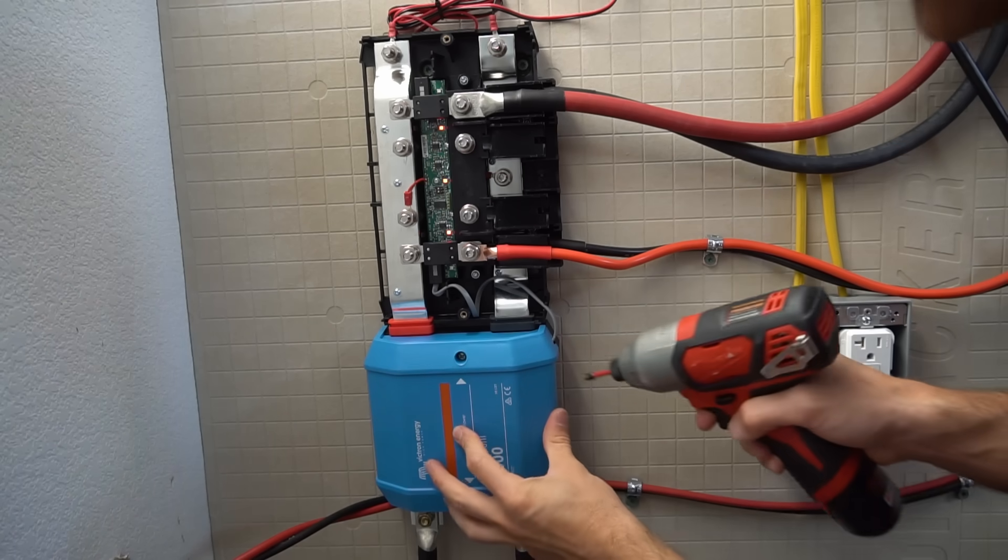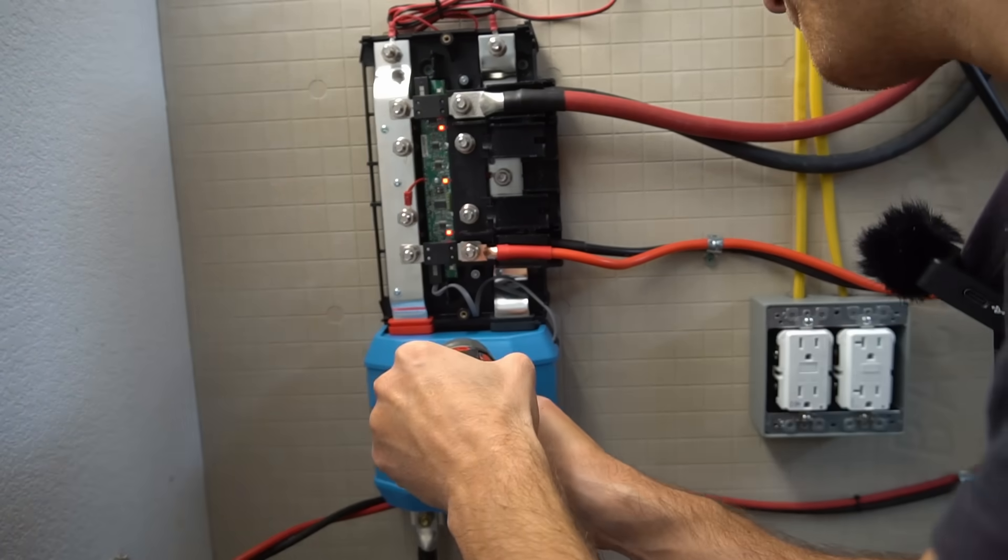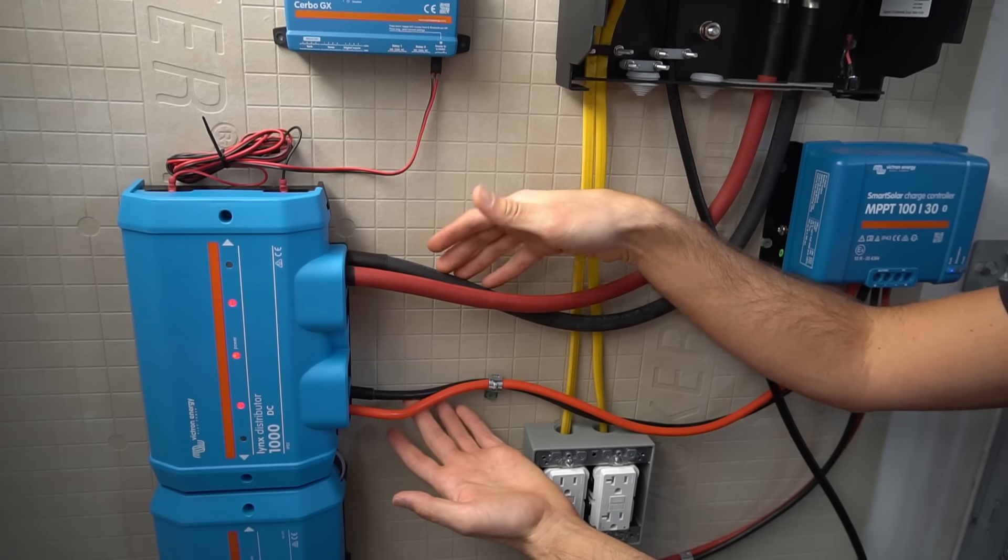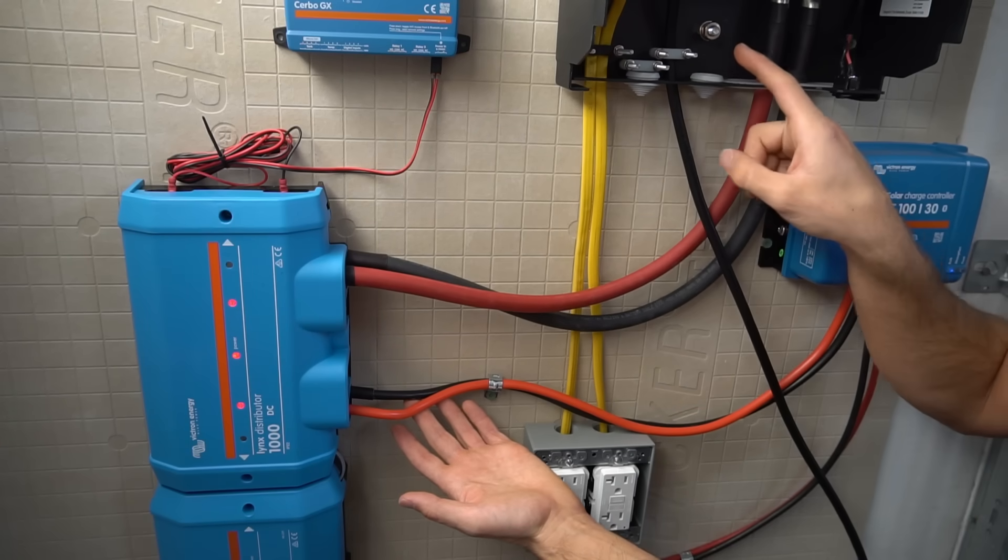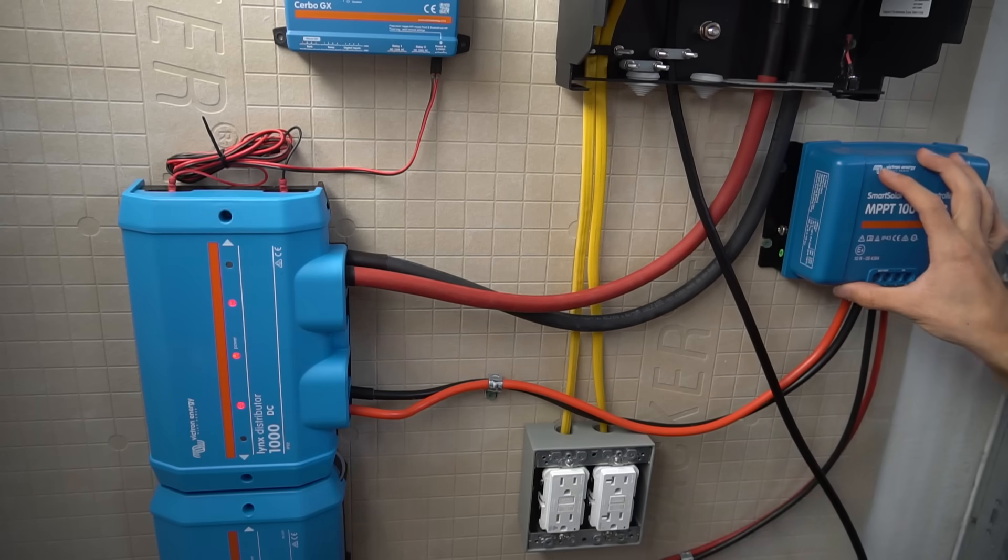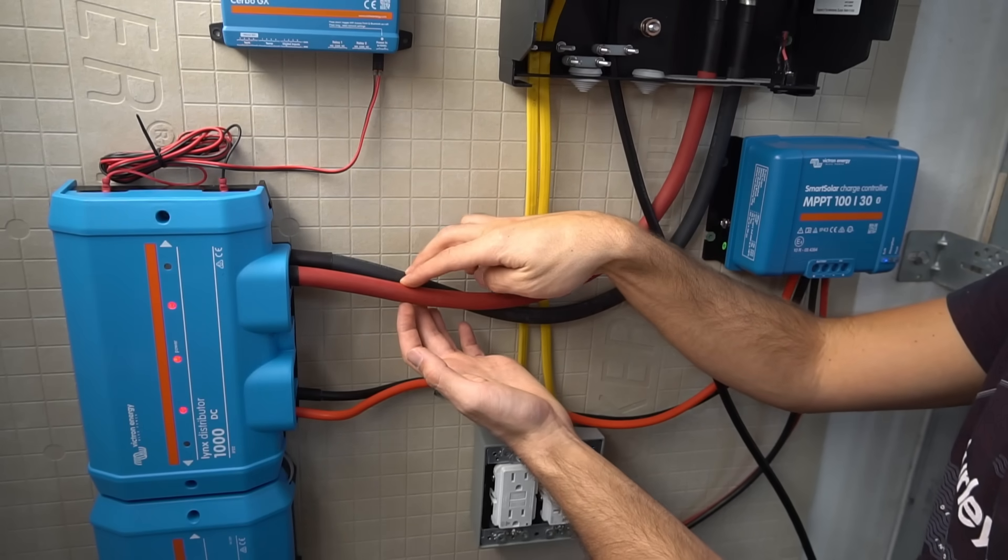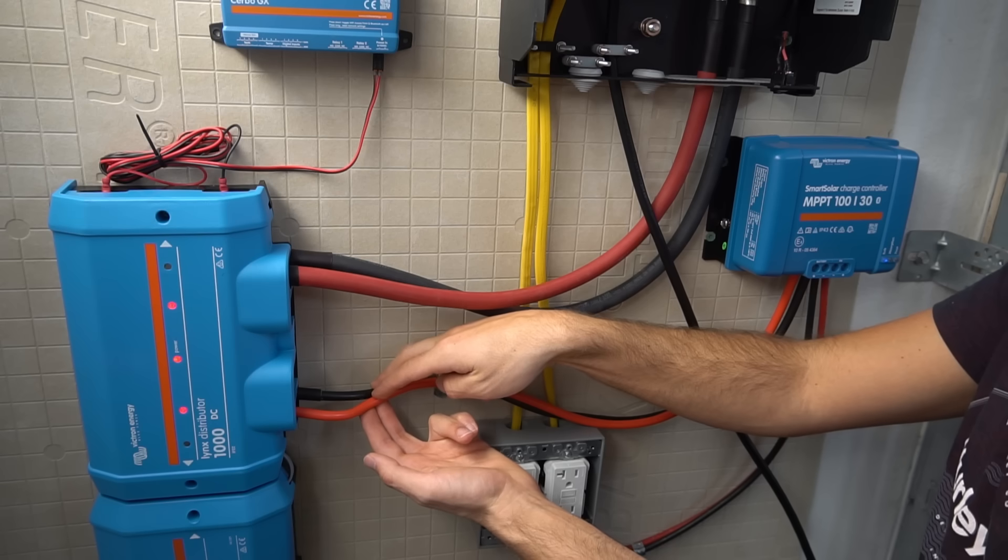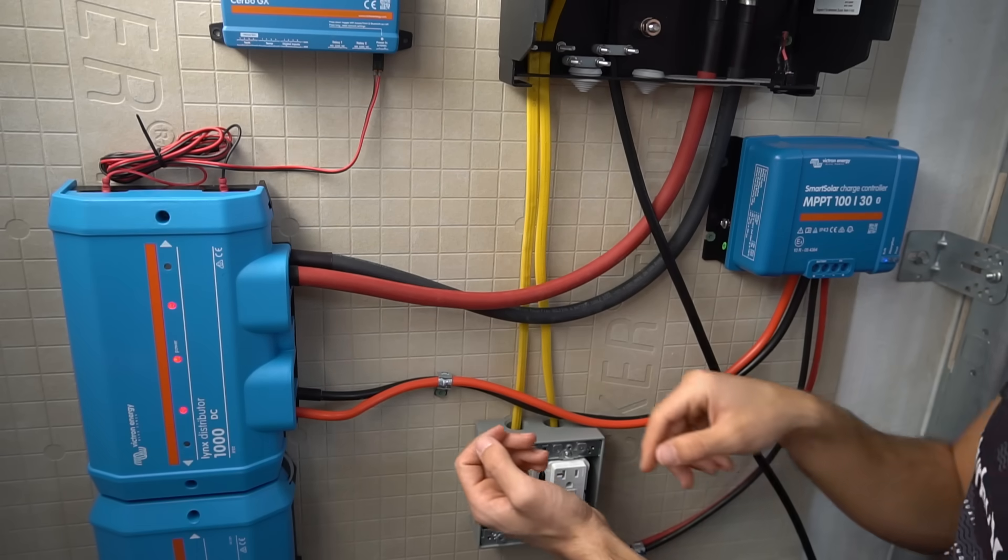Now these massive cables connect the distributor to our 12 volt inverter and also our solar charge controller. These cables have to handle 250 amps and these only have to handle 40 amps. So there's a massive size difference.